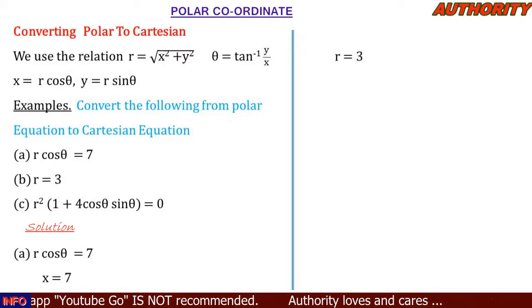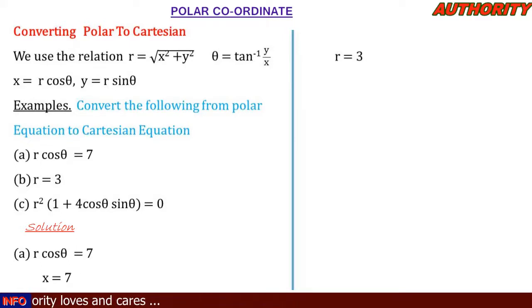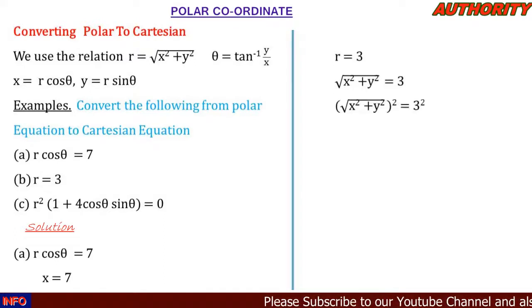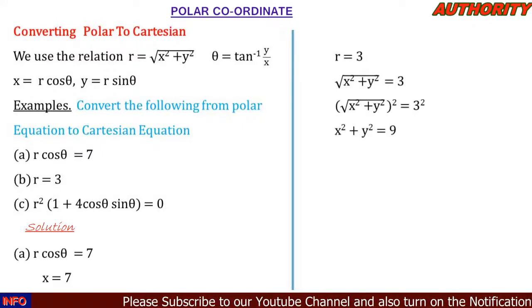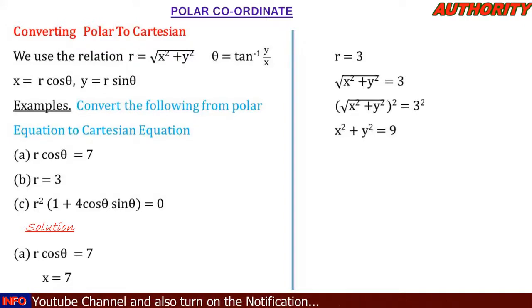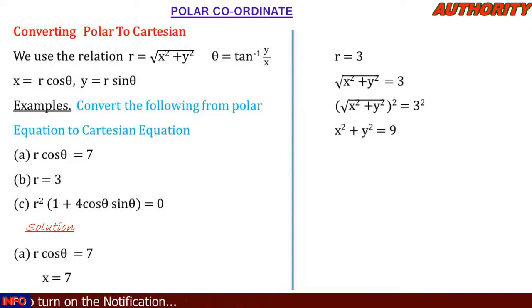For number two, r = 3: using r = √(x² + y²), replace r to get √(x² + y²) = 3. Squaring both sides cancels the square root, giving x² + y² = 9. This confirms the Cartesian form of r = 3 is x² + y² = 9.